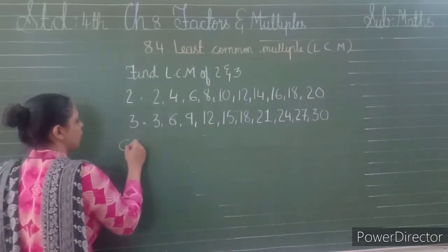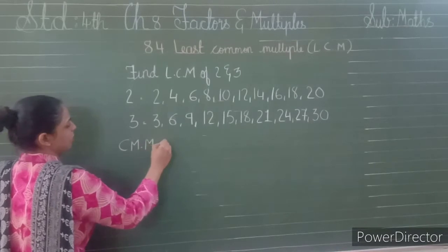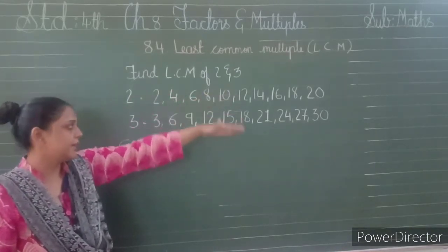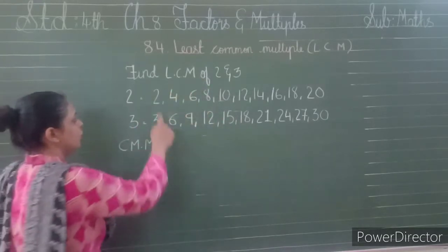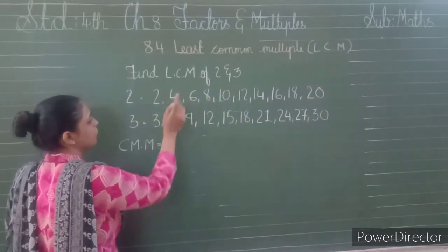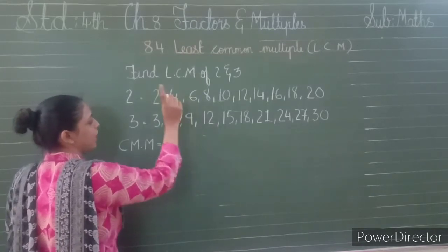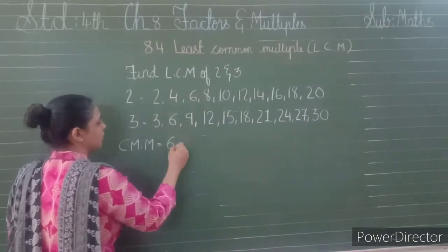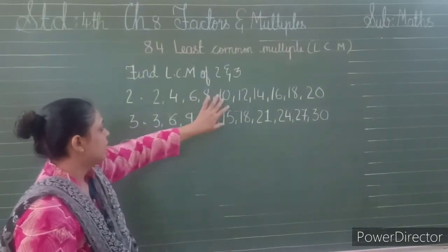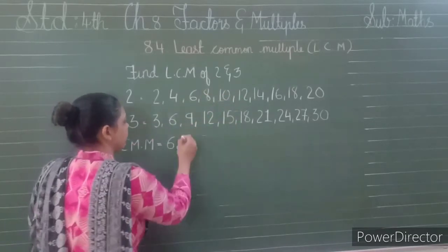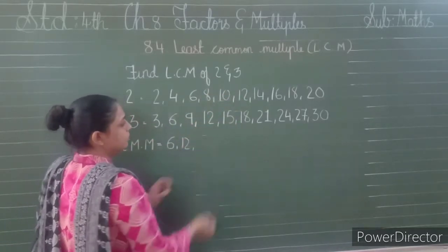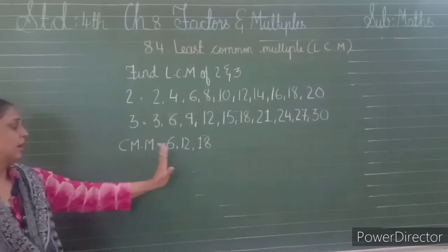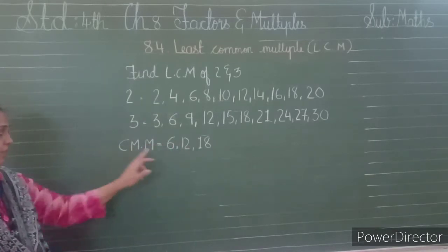Now we have to find out the common multiples. We have to see which numbers are common in both the multiples of 2 and 3. 2 is not here, 4 is not present here, but 6 is present in both numbers — so 6 is one of the common numbers. 8 is not present, 10 is not present, but 12 is present, and 18 is also present. So the common multiples of 2 and 3 are 6, 12, and 18.